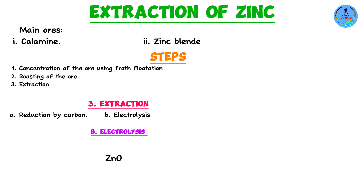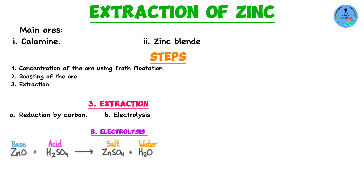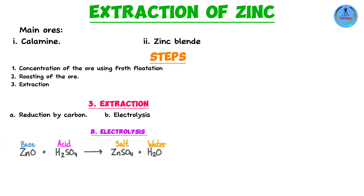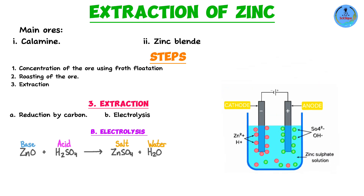Zinc oxide is almost insoluble in water, so water cannot be used as a solvent. However, it does dissolve in dilute acids such as sulfuric acid. So zinc oxide is dissolved in dilute sulfuric acid: ZnO + H₂SO₄ → ZnSO₄ + H₂O. The zinc sulfate is then dissolved in water to form a solution, which is electrolyzed.